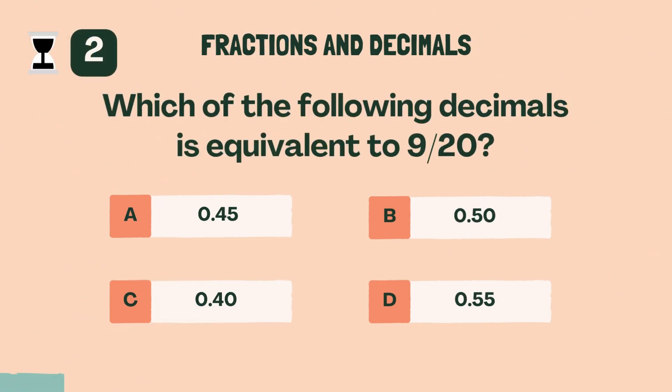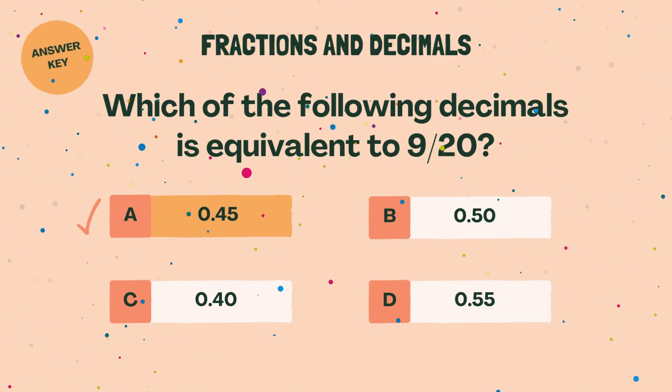Which of the following decimals is equivalent to 9 twentieths? A, 0.45.